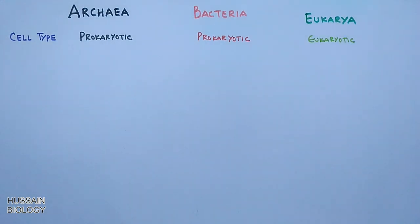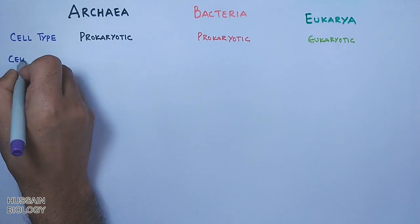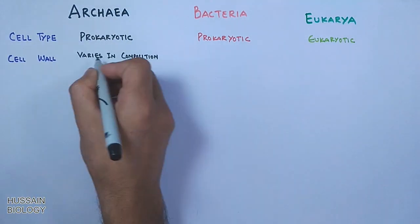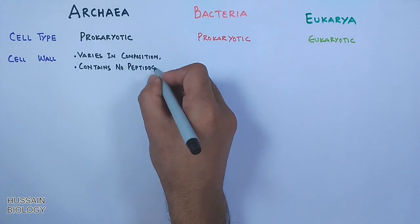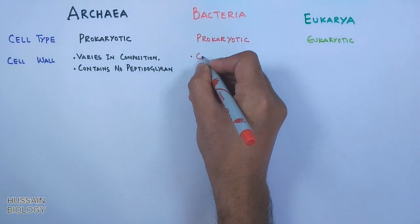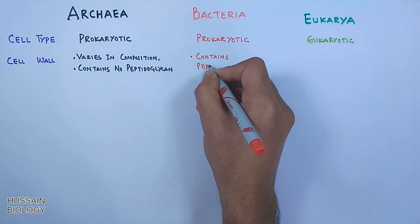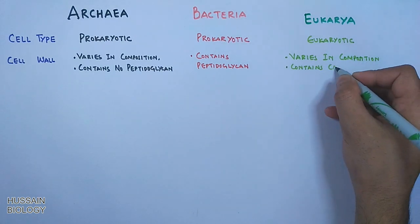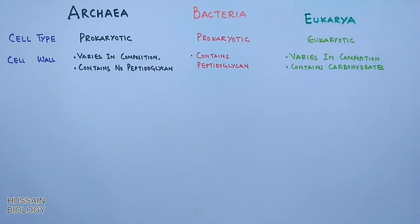The second comparison is the cell wall. In Archaea, the cell wall varies in composition and contains no peptidoglycan — this is an important point. In Bacteria, the cell wall contains peptidoglycan. In Eukarya, the cell wall varies in composition and contains carbohydrates.